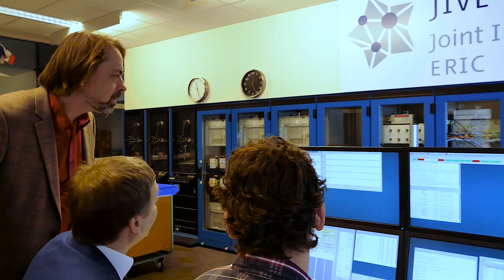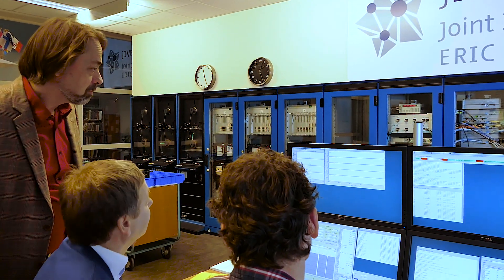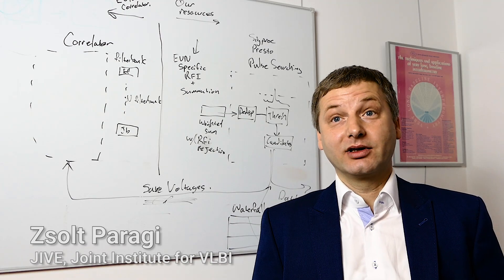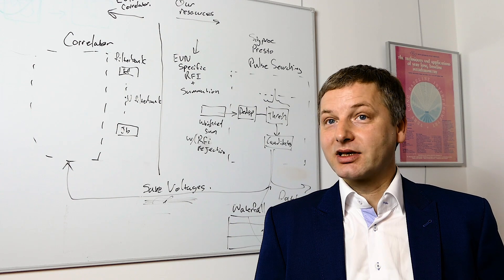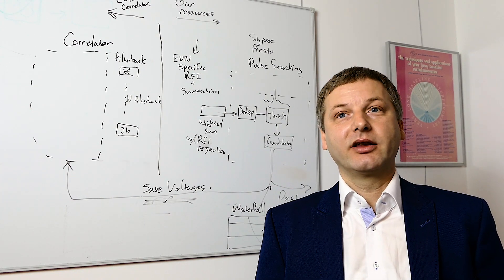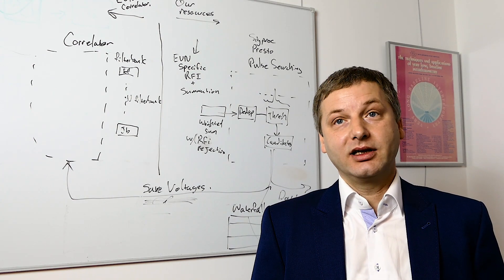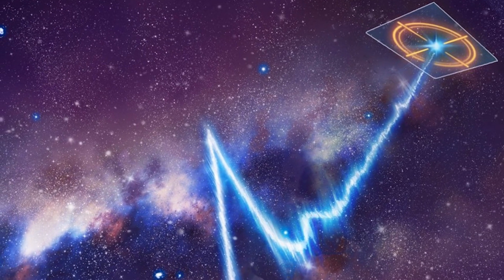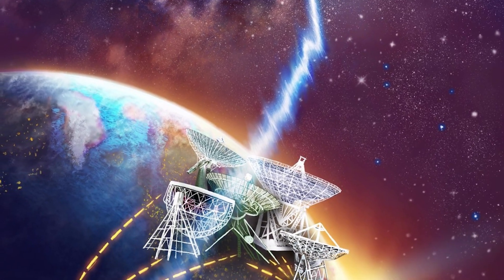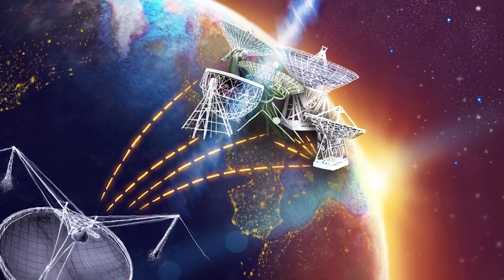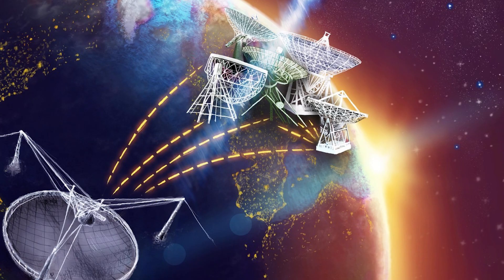To find the accurate sky position of these fast radio bursts, you need more radio telescopes working together. The approximate sky position of this FRB was found by the Very Large Array in the USA. To get a ten times more accurate position, we use telescopes spread across the globe, separated by thousands of kilometers. This is called the European VLBI Network.